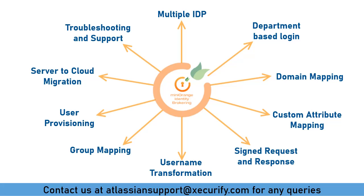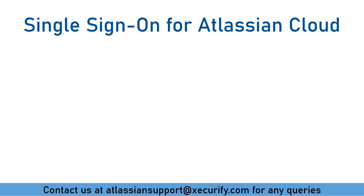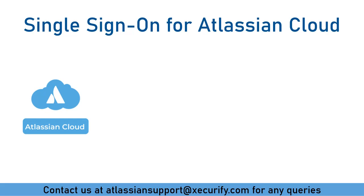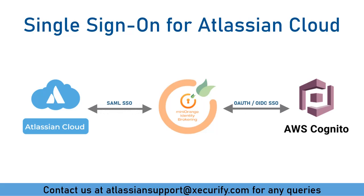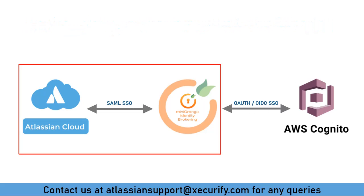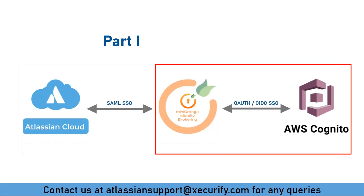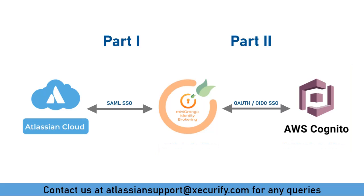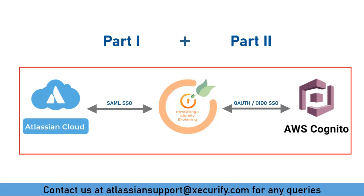You can share plugin configurations and logs via email or customer portal. As discussed earlier, we will be configuring Atlassian Cloud with AWS Cognito using MiniRange Broker. The setup is divided into two parts. We will configure SAML SSO between Atlassian Cloud and MiniRange in part 1, and then configure OAuth/OpenID Connect SSO between MiniRange and AWS Cognito in part 2. Finally, we will conclude the setup by combining parts 1 and 2 to show the SSO between Atlassian Cloud and AWS using MiniRange Broker.